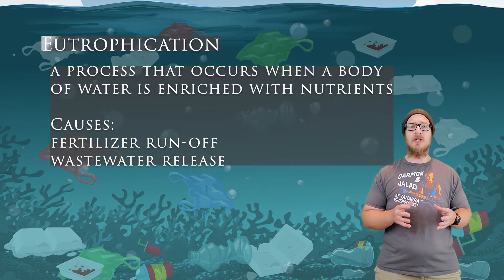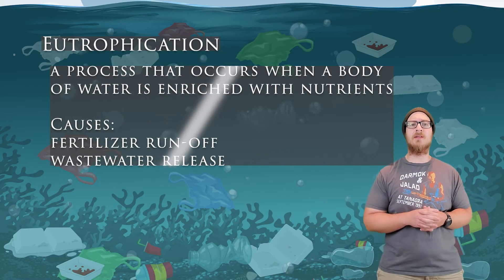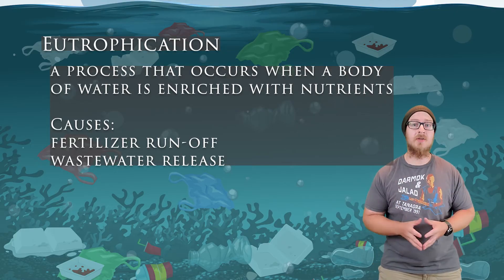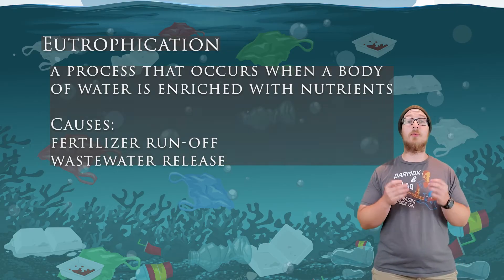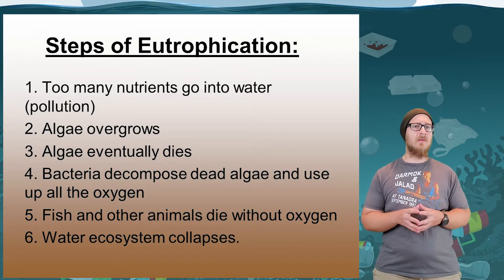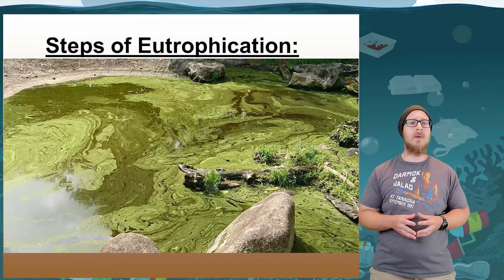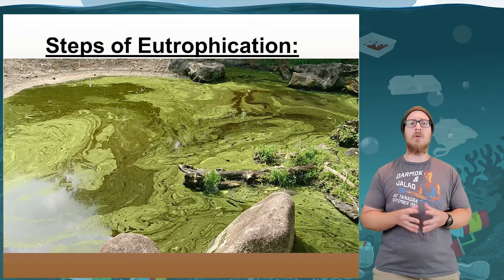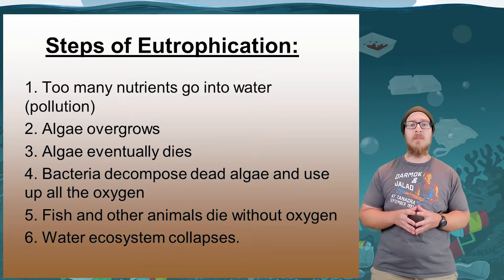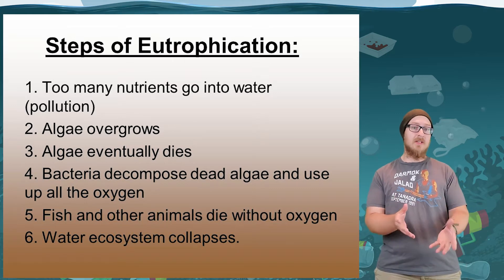Eutrophication is a process that occurs when a body of water is enriched with extra nutrients. The most common way this happens is through agricultural fertilizer runoff, but it can also occur through wastewater release. The increase of nutrients in a body of water — notably nitrogen and phosphorus compounds — causes algae populations to increase very quickly. All this algae eventually depletes the water of nutrients, and the high algae population can no longer be supported, so much of it dies off.